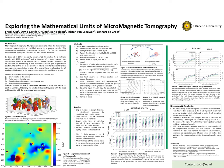Welcome to this pitch concerning the exploration of mathematical limits of micro-magnetic tomography. Micro-magnetic tomography, or MMT, makes it possible to obtain the characteristic remnant magnetization of individual grains by combining a quantum diamond magnetometer, which images the magnetic field, and a micro-CT, which obtains the location of individual magnetic grains. This method was successfully used by de Groot and others to obtain the magnetization of individual grains in a synthetically created sample.